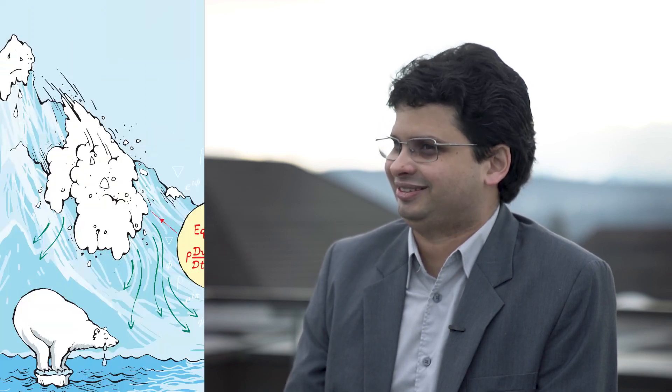Mathematics plays a key role because to predict an avalanche or the dynamics of an avalanche, you need to numerically simulate or solve some nonlinear partial differential equations. The whole thing is a mathematical exercise.